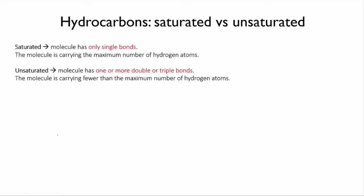A saturated molecule is one that has only single bonds, while an unsaturated molecule has one or more multiple bonds, double or triple.